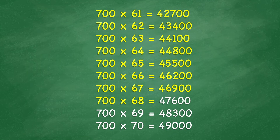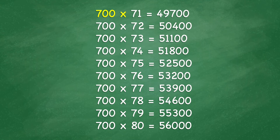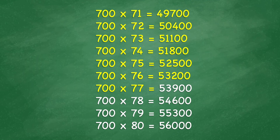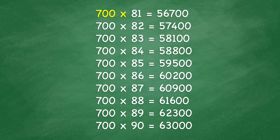700 times 68 equals 47,600. 700 times 69 equals 48,300. 700 times 70 equals 49,000. 700 times 71 equals 49,700. 700 times 75 equals 52,500. 700 times 76 equals 53,200. 700 times 77 equals 53,900. 700 times 78 equals 54,600. 700 times 79 equals 55,300. 700 times 80 equals 56,000. 700 times 81 equals 56,700.